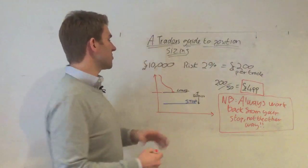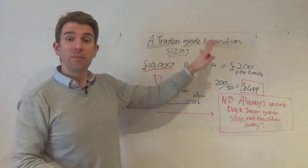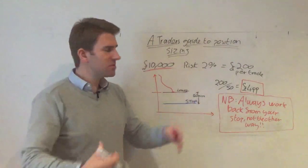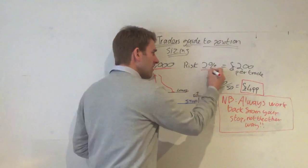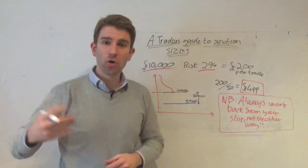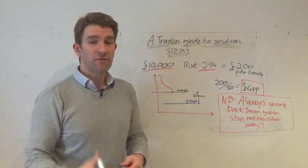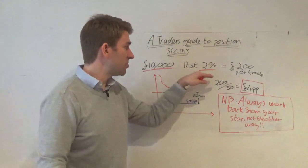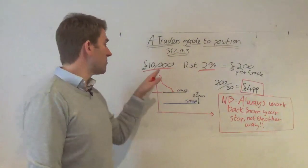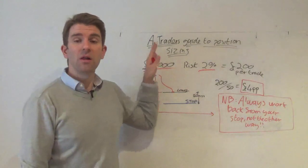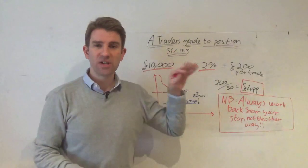Let's say for example we have a £10,000 account, could be less, could be more, just for argument's sake to make these numbers nice and easy. We've said in our trading plan that we're going to risk no more than 2% of our total account value on each trade. Now that's going to be different for each individual. Some people that might be too conservative, some people might be too aggressive. Obviously it's going to depend on your account balance as well.